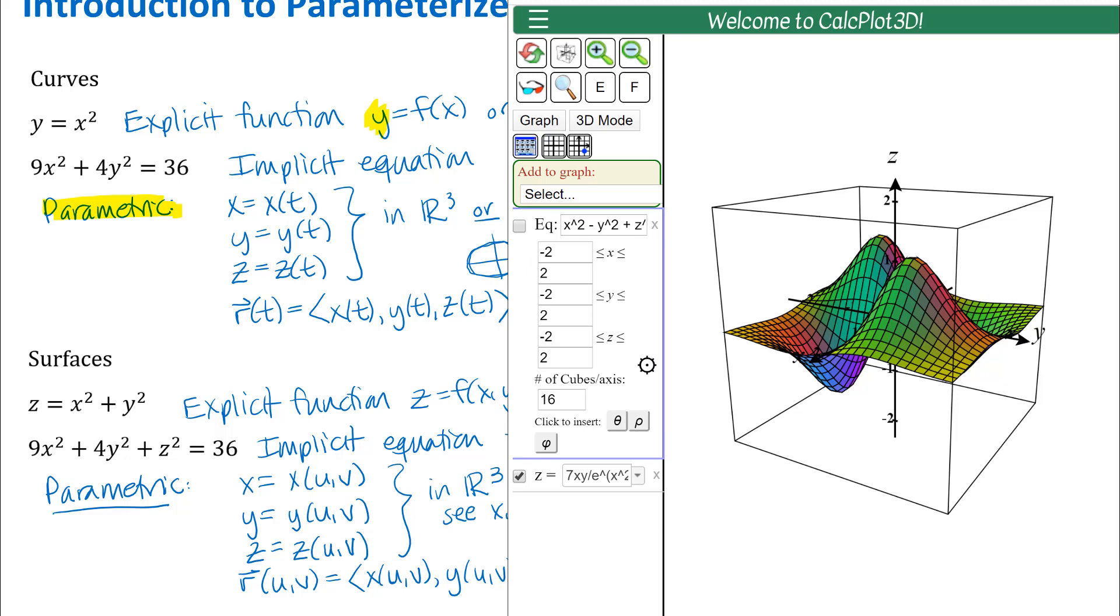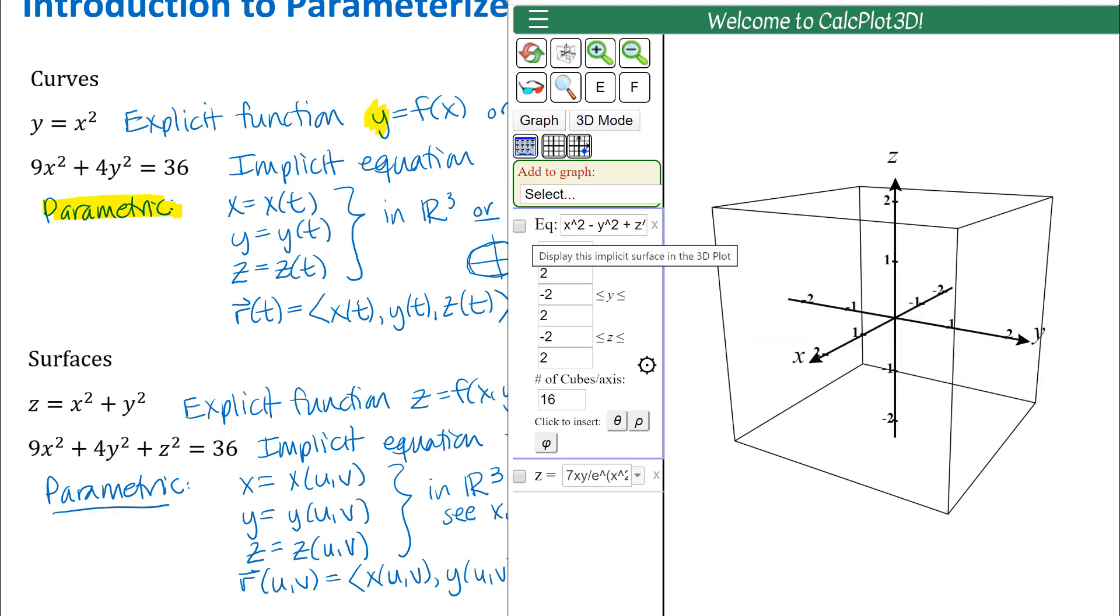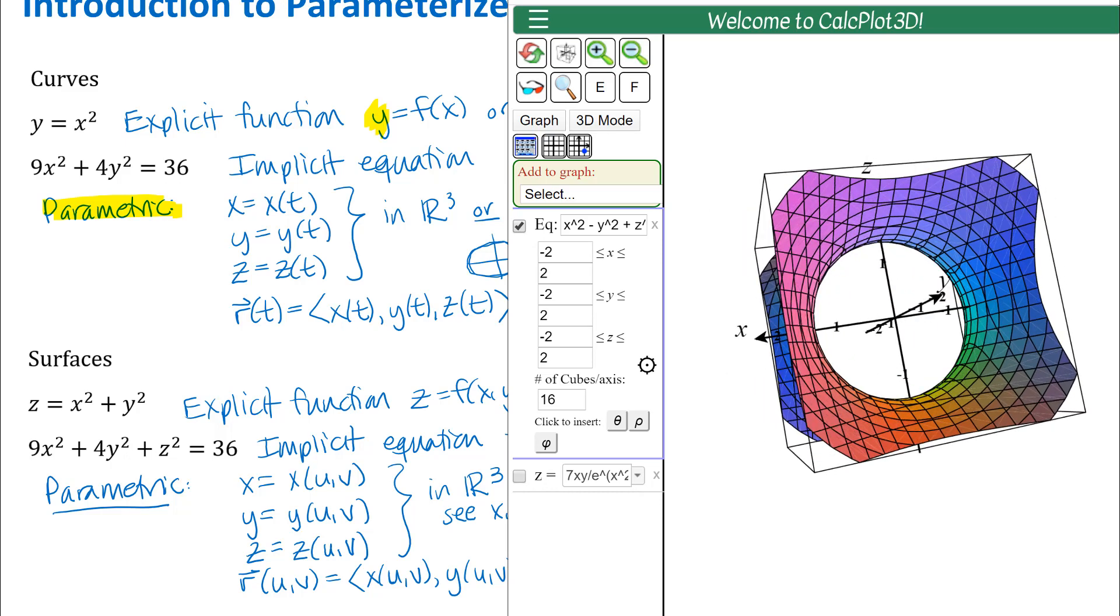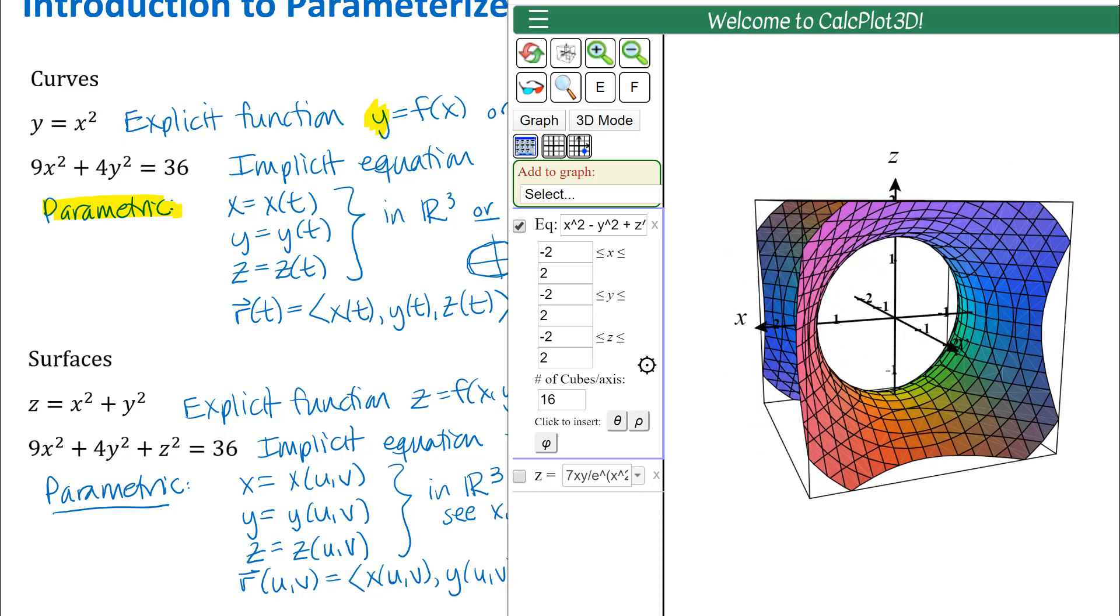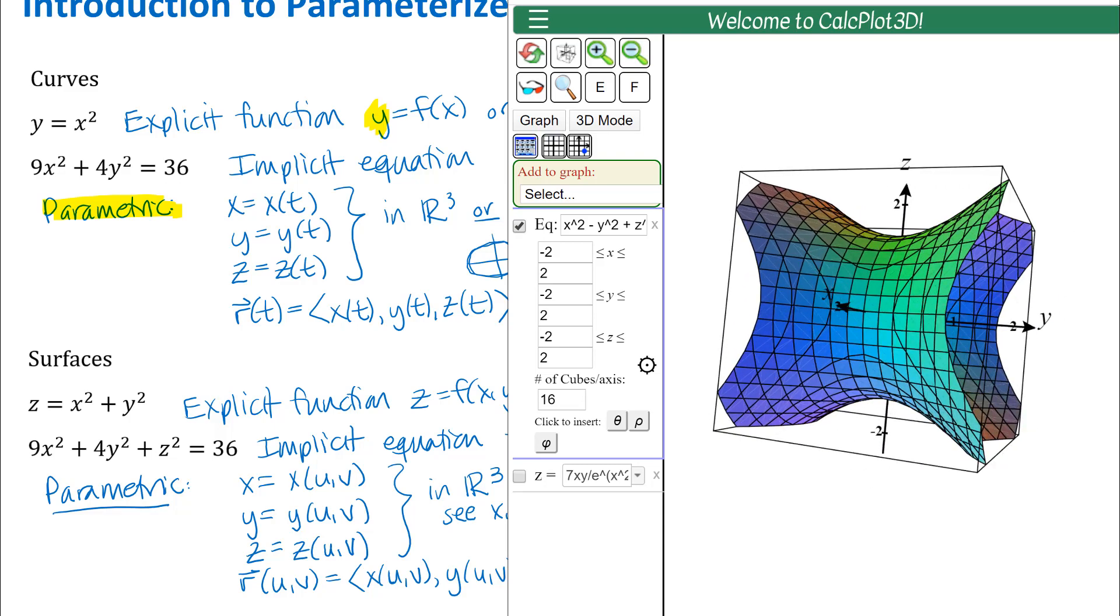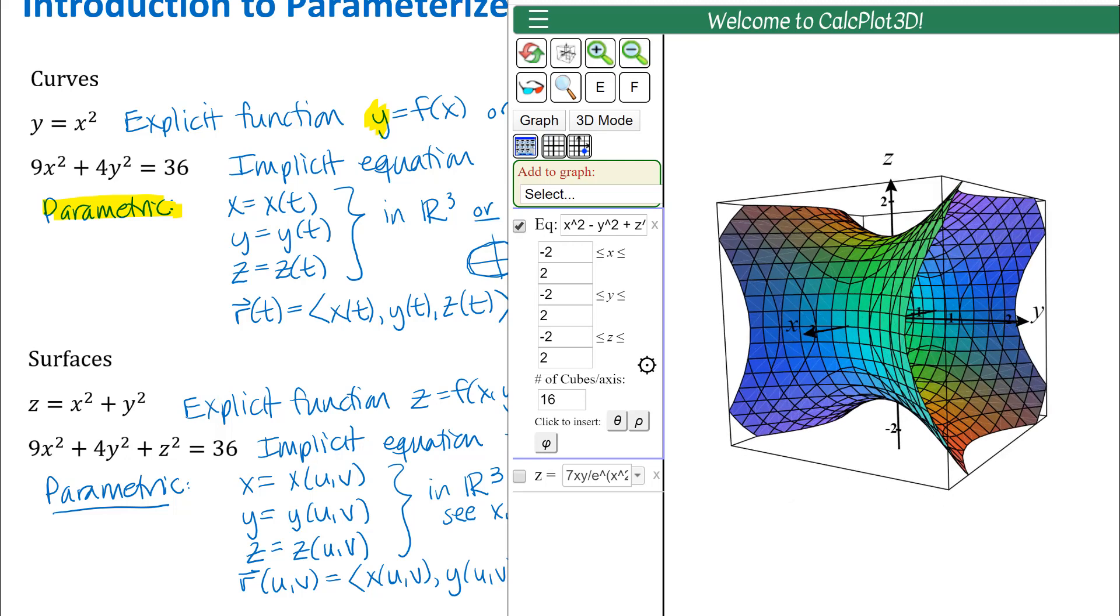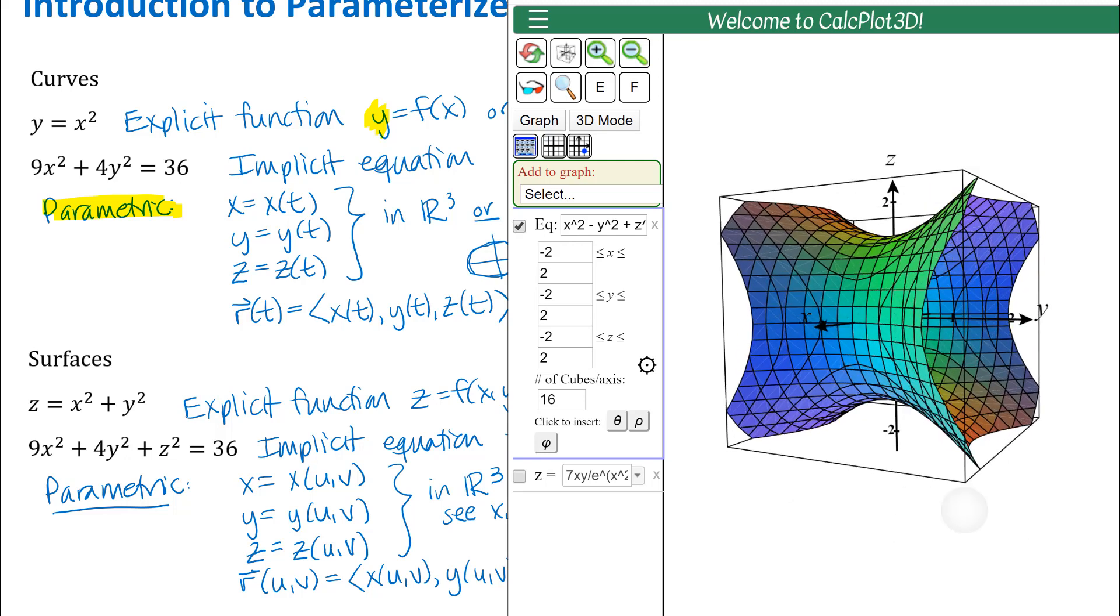One of them is you can add an implicit surface. I'm going to uncheck the default graph and I'm going to check this one. It just brought up one as an example. You can see that we've got there what looks like to be a hyperboloid of one sheet opening along the y-axis. That's just one of the example equations that came up there and you can type your own equation in there too if you wish.